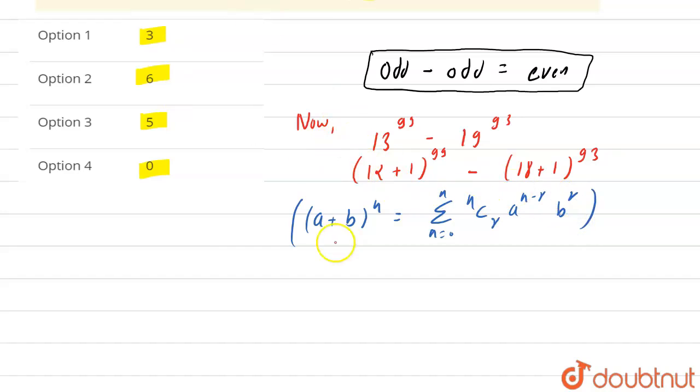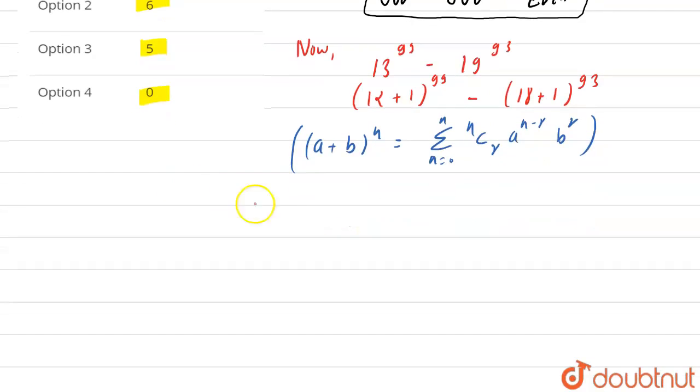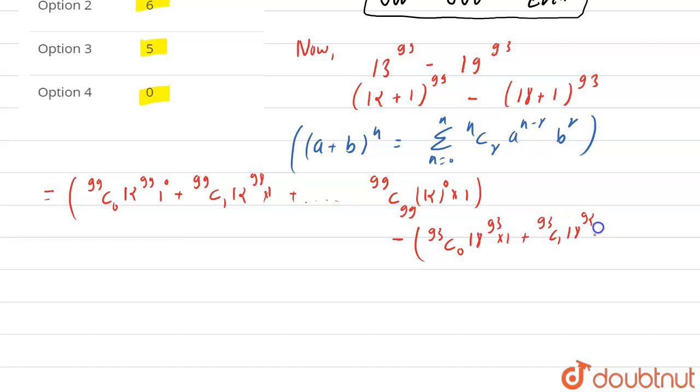So if we use this in this upper equation, then this becomes: This will give us 99 C 0 times 12 to the power 99 times 1, plus 99 C 1 times 12 to the power 98 times 1, dot dot dot, plus 99 C 99 times 12 power 0 times 1, minus the same for this: 93 C 0 times 18 to the power 93 times 1, plus 93 C 1 times 18 to the power 92 times 1, dot dot dot, plus 93 C 93 times 1.